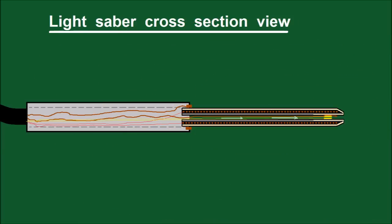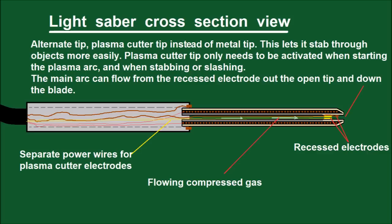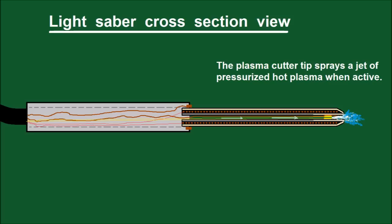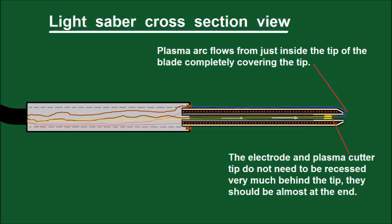Instead of a metal electrode at the tip of the blade, there could also be a hole in the ceramic shell that a compressed air plasma cutter sprays through to replace a sharp metal tip with a jet of plasma. The plasma cutter tip would need to be powered on for a second when the blade is extending so the plasma jet could act as the tip electrode. Once the blade is running, the plasma cutter could be off most of the time except when stabbing or slashing.